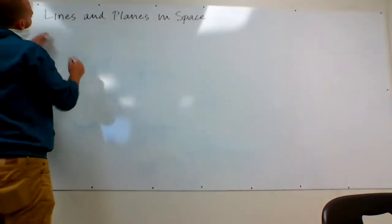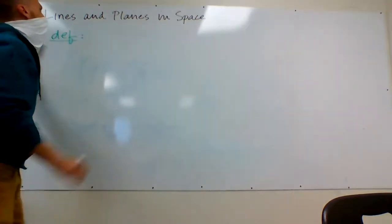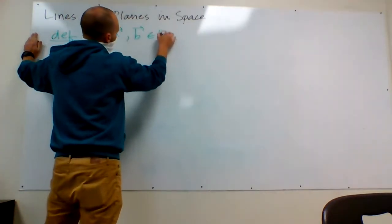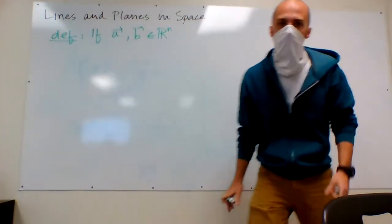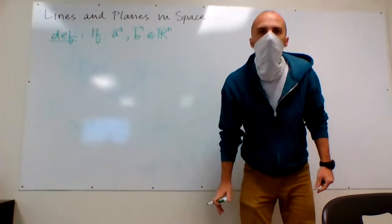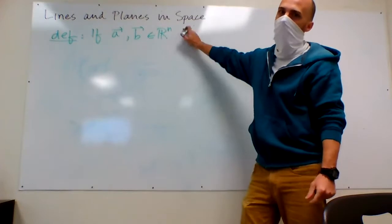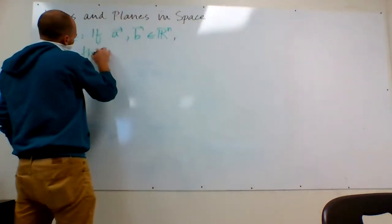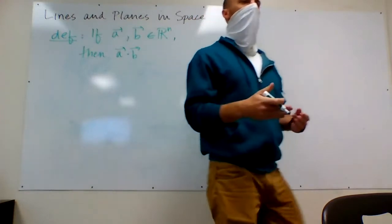So, you know, definition of dot product. If A and B are elements of R^n, which means that they are n-dimensional vectors, they are vectors that have n components in them, then A dotted with B is a way that we can multiply vectors and get back a number.